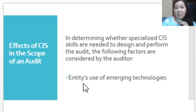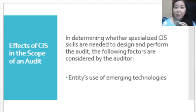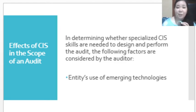Another factor is the entity's use of emerging technologies. If the entity is very up-to-date in its application of computer systems, programs, or software, the auditor really needs to understand these as well. If he is not able to understand them sufficiently, he will need the help of an expert. Those are the different factors the auditor should consider in determining whether specialized CIS skills are needed.